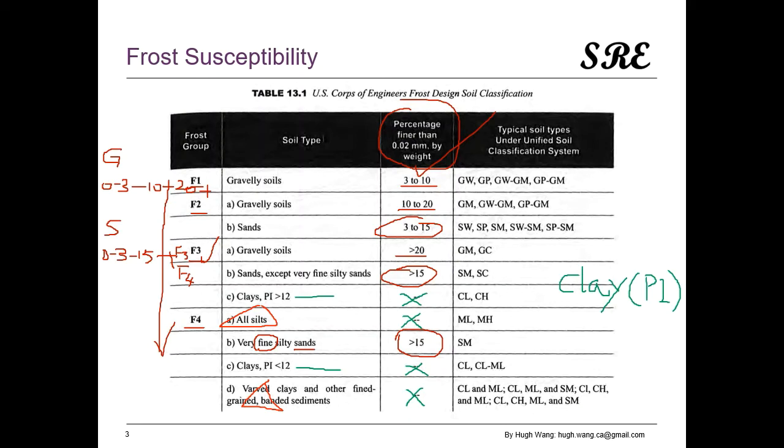In this table, it mentions one number: PI greater than 12 or less than 12. So when the plasticity index of the clay is less than 12, it is F4. When the plasticity index is greater than 12, it is F3. So you can see that with the increase of plasticity, the soil becomes less frost susceptible.